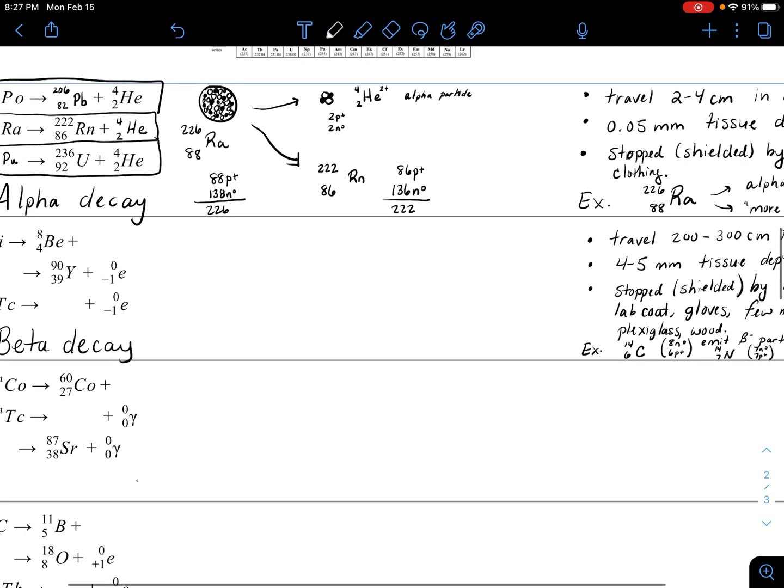This is kind of an important thing about beta decay: a neutron in the unstable nuclei is broken down into a proton and electron. A neutron is sort of sacrificed and turned into a proton and electron. That's how the proton count can go up and the neutron count can go down.